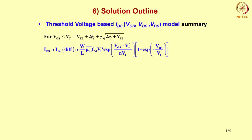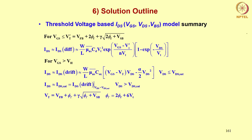Now let us summarize the threshold voltage based model, both for the diffusion component and the drift component. The diffusion component of the threshold based model is given by this formula, where V't is the threshold voltage based on the twice-φf criterion. The drift model is valid for Vgs greater than Vh. The diffusion expression is valid for Vgs less than V't. Note that V't and Vh are different values — they are not the same.